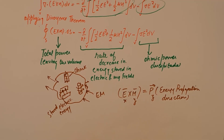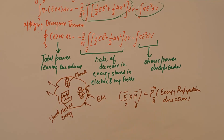The pointing theorem is extremely real, makes sense, and is practical. It tells you that the total power leaving the volume by an electromagnetic wave is because of the rate of decrease in energy stored in electric and magnetic fields and the ohmic power dissipated. I hope the derivation of pointing vector and pointing theorem was of some help. If you liked the video, please consider subscribing to the channel. Have a good day and a good life. Bye.